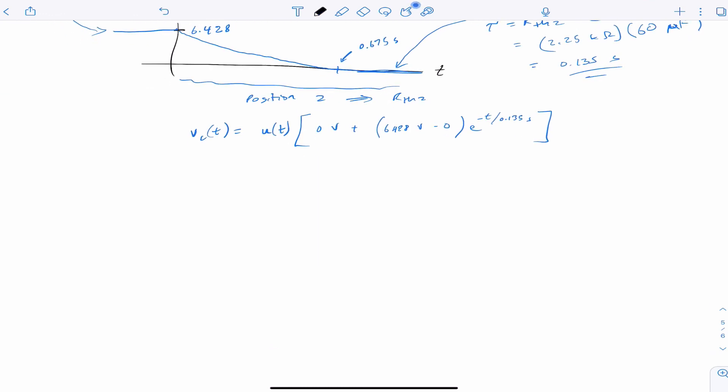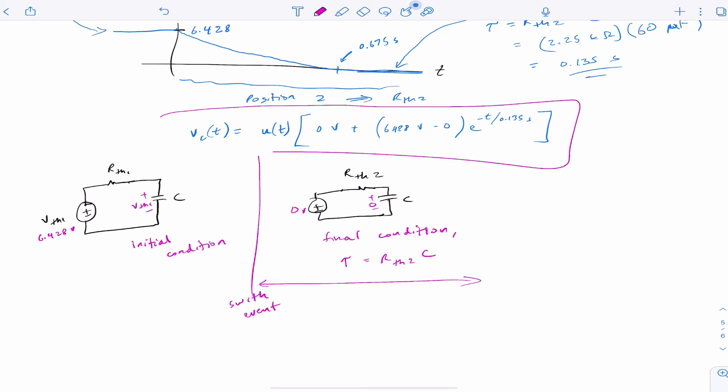So in summary, for this problem, we had a Thevenin equivalent circuit. In this case, it was 0 volts here, and it was 6.428, and in this case, it was 6.428. The two Thevenin circuits give us the initial condition and final condition. And since we're calculating the dynamics for this range, we use the time constant and the capacitance. So that was what we needed to find that voltage.